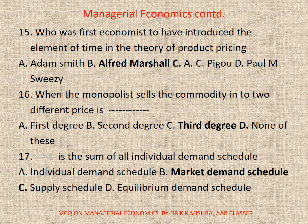16. When the monopolist sells the commodity in two different prices, it is: A. First degree, B. Second degree, C. Third degree, D. None. Correct option is C. Third degree.